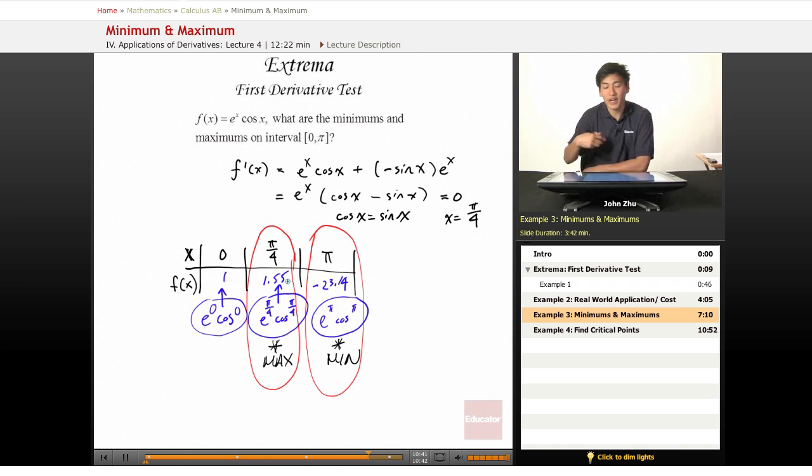So all we're doing is finding the critical points and evaluating the function around those critical points to see the behavior of the graph, and that is the first derivative test.